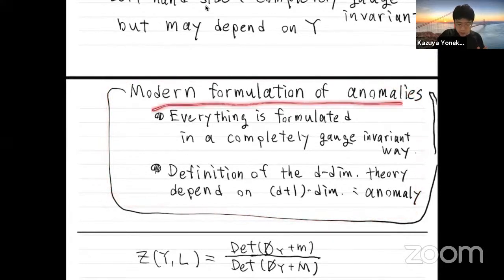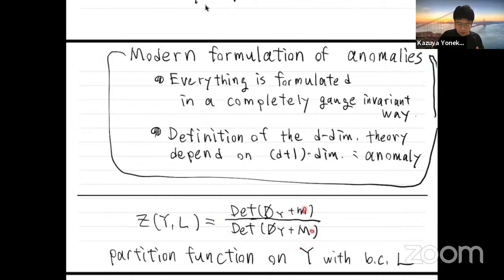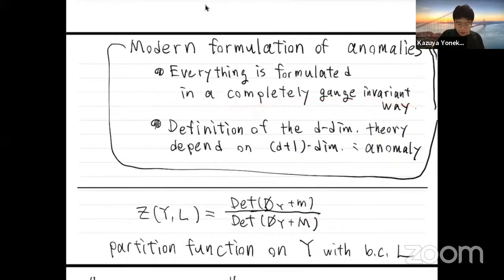This was an important point. In the modern formulation of anomalies, everything is formulated in a completely gauge-invariant way. In this situation we can define the partition function by using the Pauli-Villars regulator. This small m is the physical mass and this capital M is the Pauli-Villars mass. We take the ratio between these two and get a completely gauge-invariant definition of the partition function.